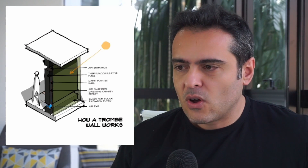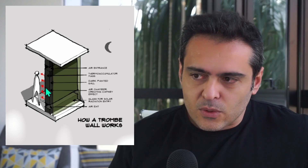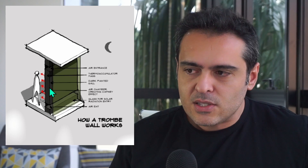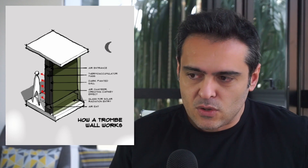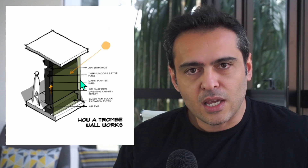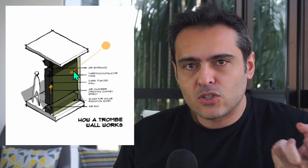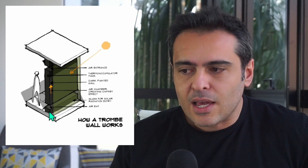So what is a Trombe wall? We have this wall here. You can see that it's dark painted. The idea is to capture the temperature from the heat. Usually a Trombe wall is positioned on the north or south facade. We are going to capture the heat from the sun, and since it's dark, it's going to capture more of this heat. And we have this glazing.